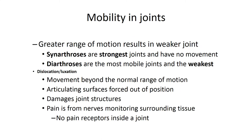Our joints provide mobility, but greater range of motion results in a weaker joint. Synarthrotic joints are the strongest because they have no movement, while diarthrotic joints are the most mobile and generally the weakest. One type of joint injury is a dislocation, also known as a luxation, where reinforcing structures cannot protect a joint from extreme stress and the articulating surfaces are forced out of position. This may damage articular cartilage, tear ligaments, or distort the joint capsule. Dislocations are very painful because nerves monitoring the capsule, ligaments, and tendons are quite sensitive. A partial dislocation is called a subluxation.